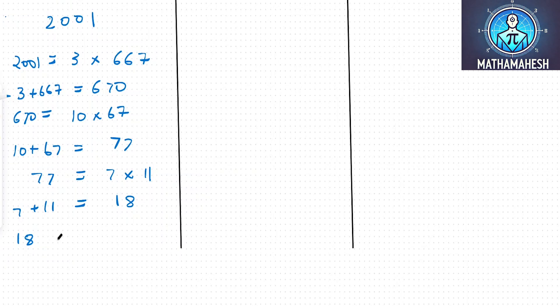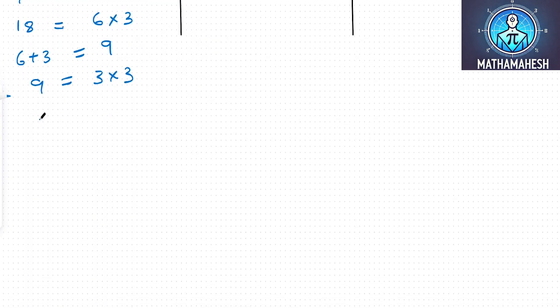18 is equal to 6 into 3. 6 plus 3 is equal to 9. 9 is equal to 3 into 3. 3 plus 3 is equal to 6. 6 is equal to 3 into 2. Now 3 plus 2 is 5.